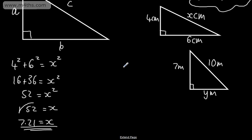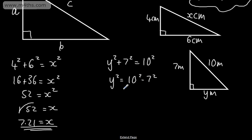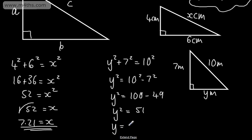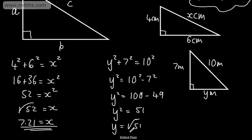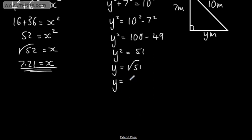Let's look at this one. This time we have one of the shorter sides defined. So we can say that Y squared plus 7 squared will be equal to 10 squared. I'm squaring the shorter side, adding them together, and that gives me the hypotenuse squared. So I'm going to subtract the 7 squared from both sides: 10 squared minus 7 squared gives me Y squared equals 100 minus 49. Y squared is equal to 51. We take the positive square root of 51, and on a calculator that gives us 7.14 correct to two decimal places.